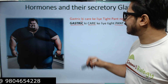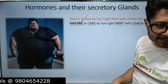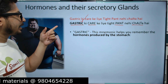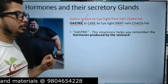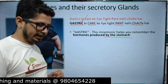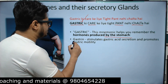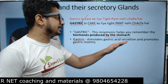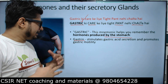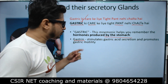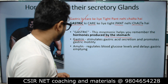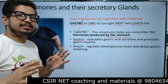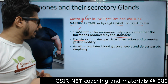Let's begin with the first kind — gastric. What are the gastric hormones, from where they are secreted, and what is their role? The gastric mnemonic helps you remember the hormones produced by the stomach. G for gastrin — stimulates the gastric acid secretion and promotes gastric motility, the peristalsis. A for amylin — regulates the blood glucose level and delays gastric emptying.